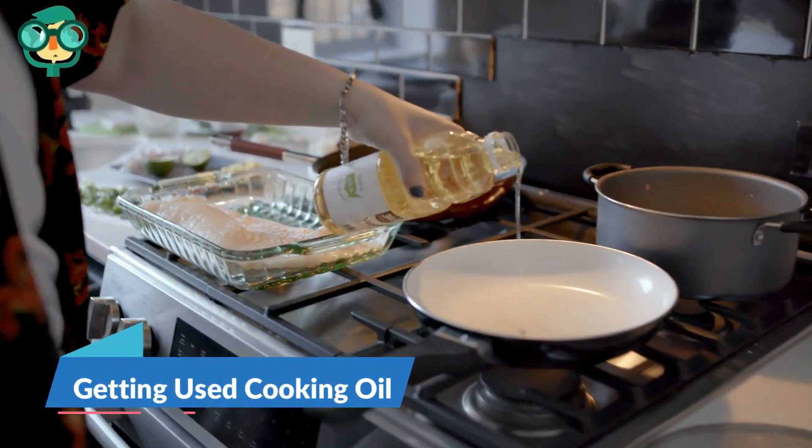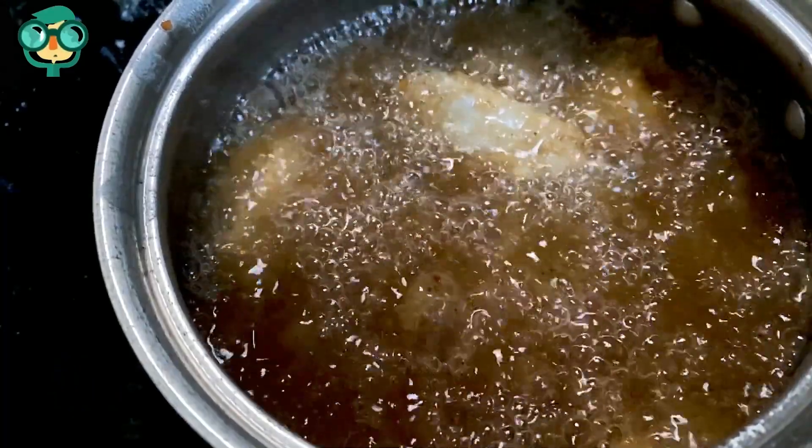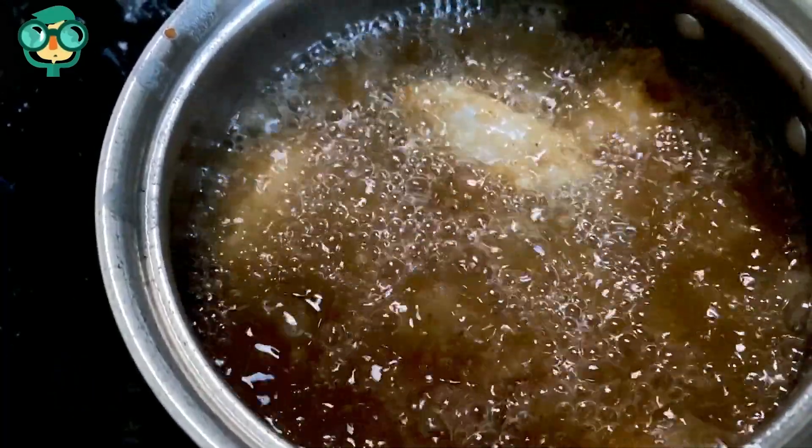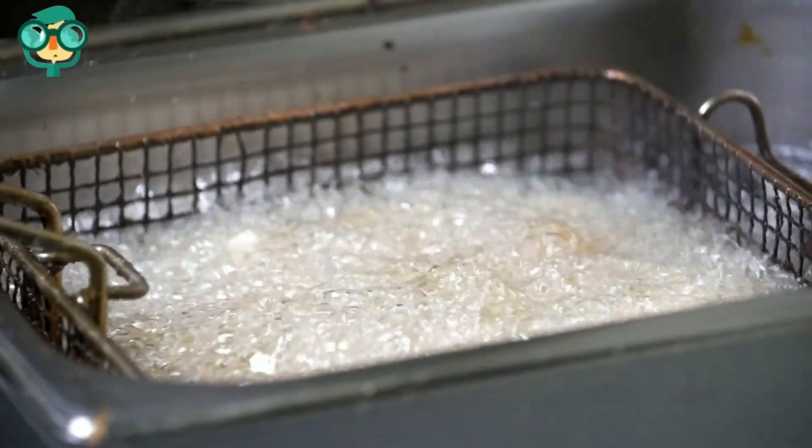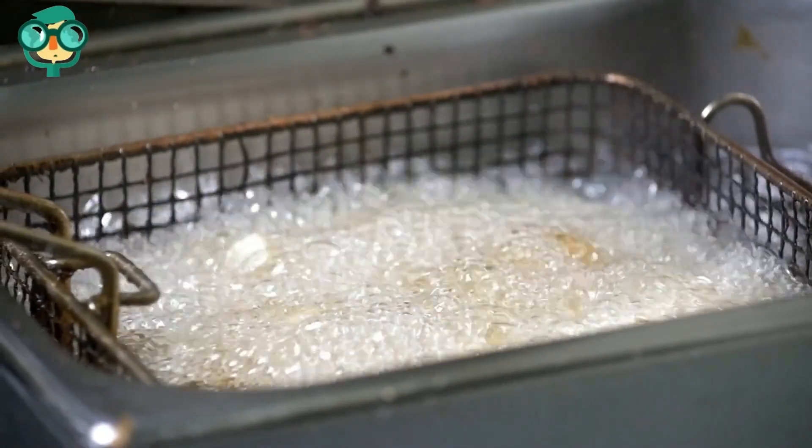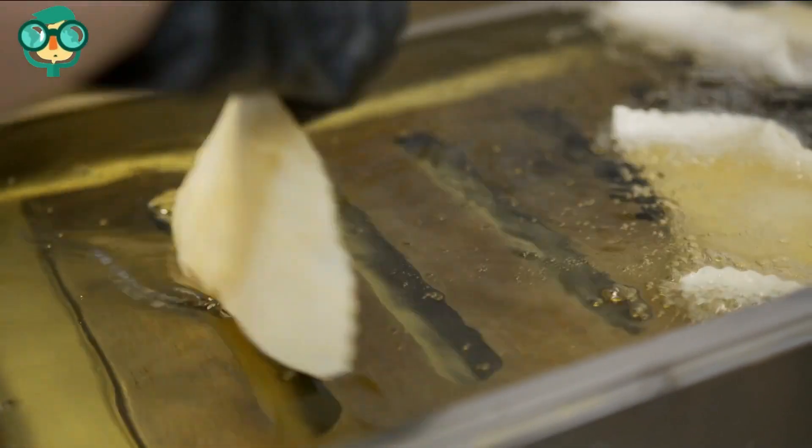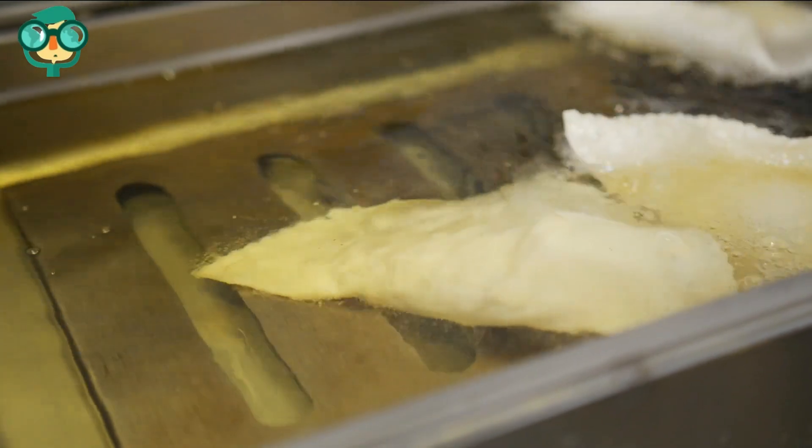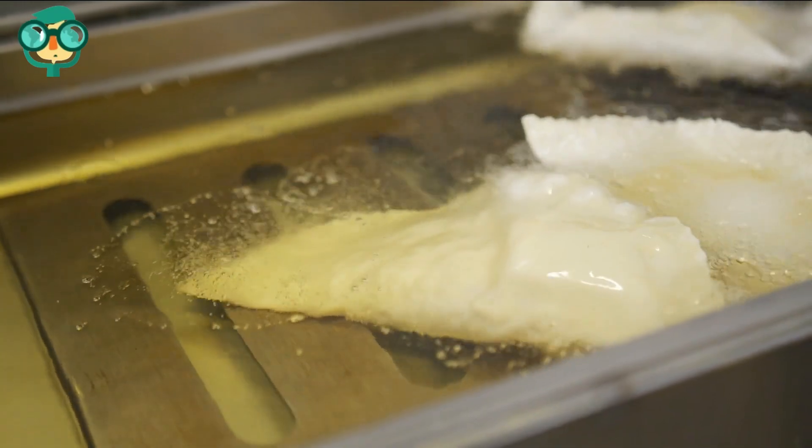The first step is getting used cooking oil. Locate a source of vegetable oil that has been used in cooking. Contact local fast food restaurants, cafeterias, hotels, and other commercial food establishments to see if you can take their waste oil or pay a very small fee for it. You may compete with rendering companies who also pay restaurants to take used oil off their hands.